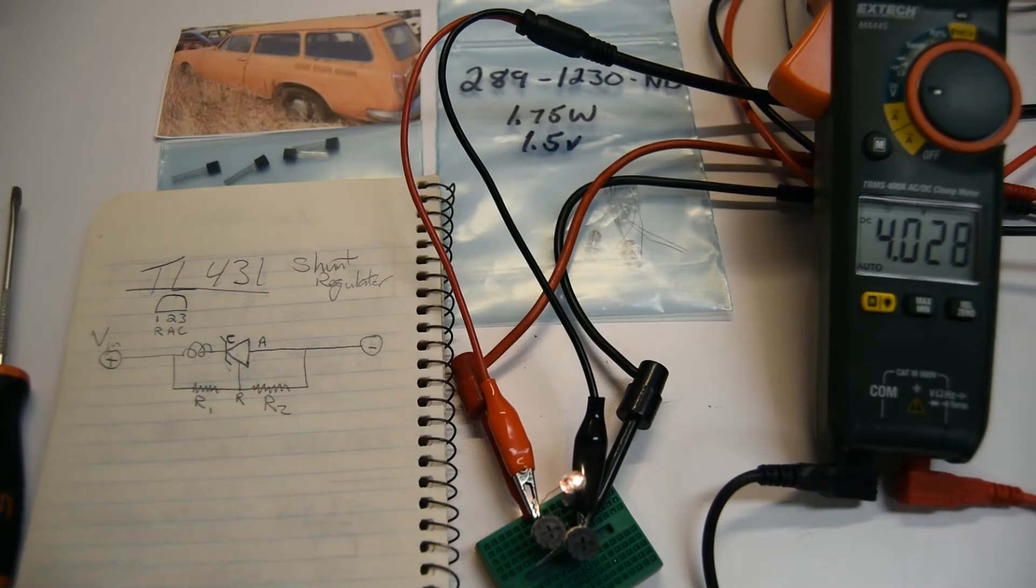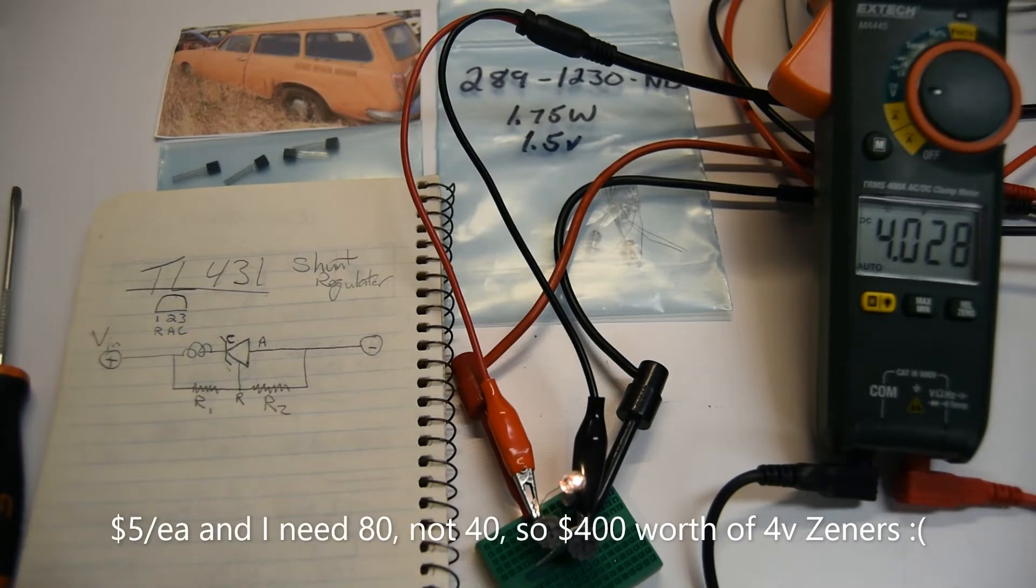I can get a four volt zener diode that's easy enough to do. However, the problem I ran across is due to manufacturing problems and supply chain problems right now, which is May of 2021, they're unobtainium. The only ones you can get are like five dollars a piece and I need forty of them, so I'm not spending two hundred dollars on zener diodes.